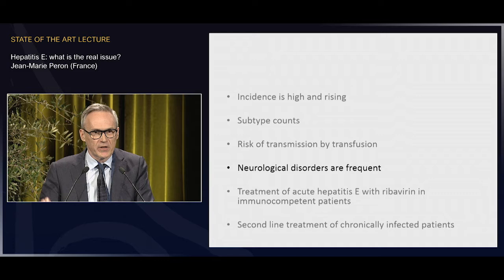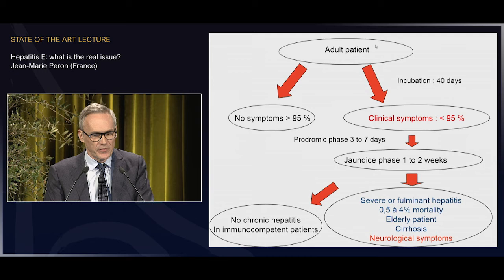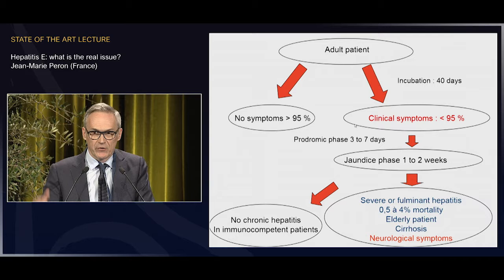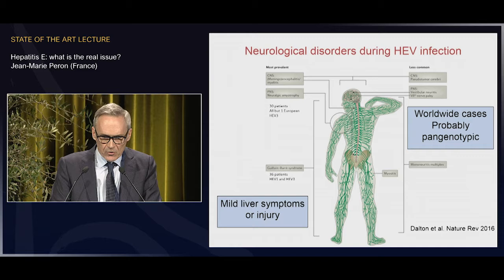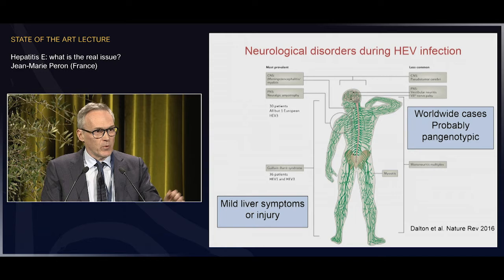Moving to the clinical aspect of hepatitis E, focusing on neurological risk: an adult patient in contact with hepatitis E in Europe has an incubation of about 40 days, similar to hepatitis A. Usually there are no clinical symptoms — less than 5% of patients will have clinical symptoms. If they do, there's about a 50% risk of jaundice, and a risk of severe or fulminant hepatitis with mortality up to 4% in some studies, especially in liver disease and cirrhotic patients. Neurological disorders during HEV infection occur worldwide with all genotypes.